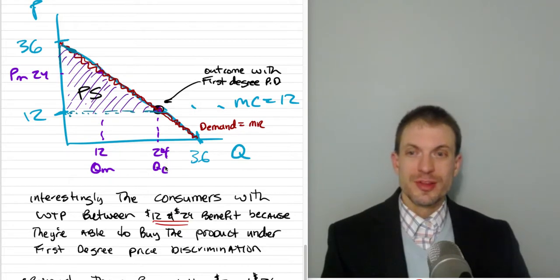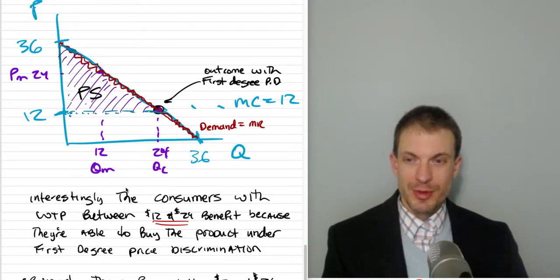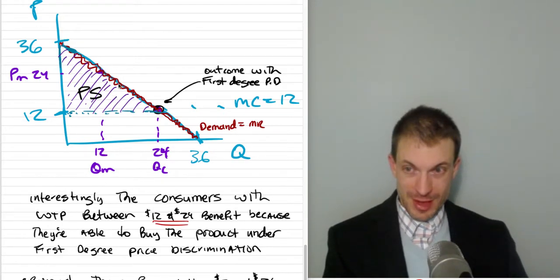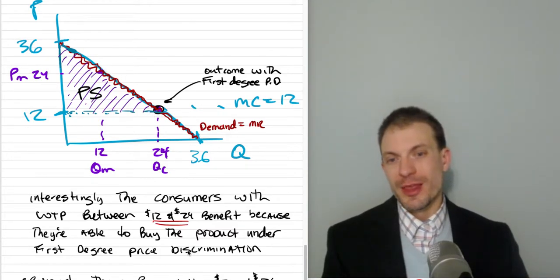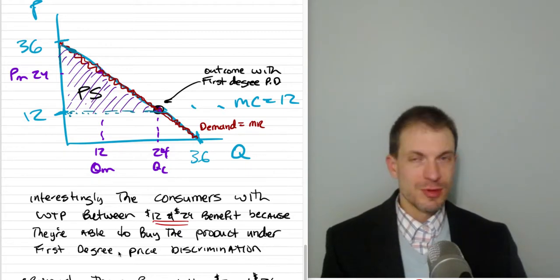Now let's make our comparison between first-degree price discrimination and ordinary monopoly. Interestingly, the consumers with willingness to pay on the demand curve right here between 12 and 24 are benefiting in some sense when they're able to buy the product under first-degree price discrimination because they're not even served.